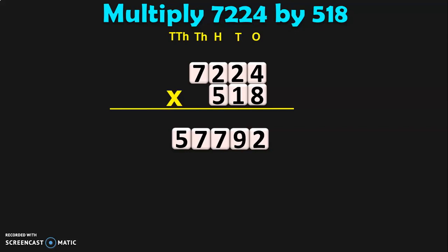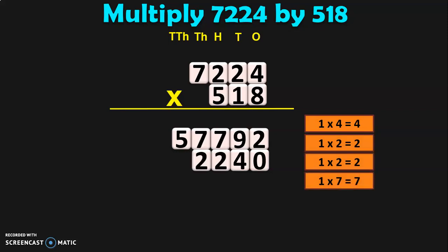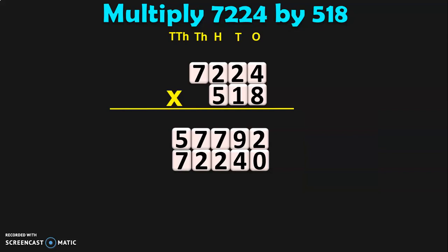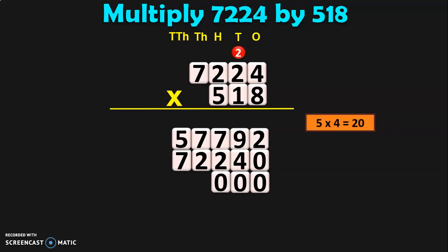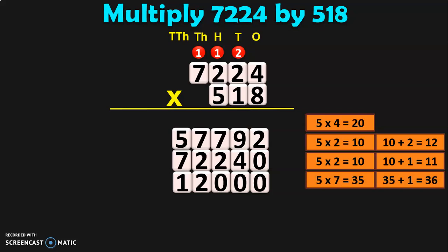Next, multiply 7224 by 10, because 1 is in the 10s place. Put a 0 in the 1s place and begin multiplication. 1 into 4 is 4. 1 into 2 is 2. 1 into 2 is 2. And 1 into 7 is 7. The next multiplication is 7,224 by 500, because 5 is in the 100s place. So, put 2 zeros: one in the 1s place and another 0 in the 10s place. 5 by 4 is 20 — 0, carry over 2. 5 twos are 10, plus 2 is 12 — 2, carry over 1. 5 twos are 10, plus 1 is 11 — 1, carry over 1. And 5 sevens are 35, plus 1 is 36. So 6 in the 1s place and 3 in the 10s place.